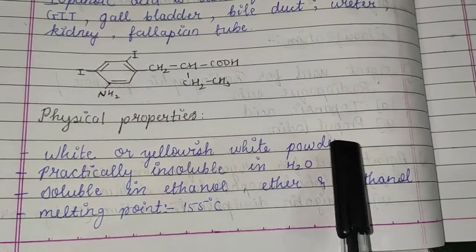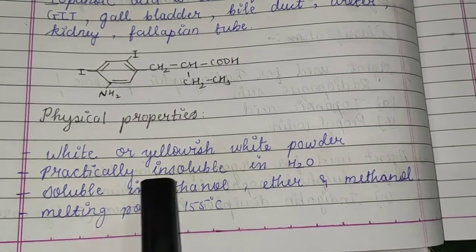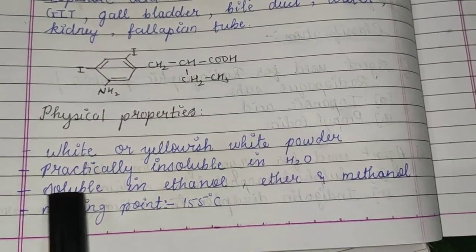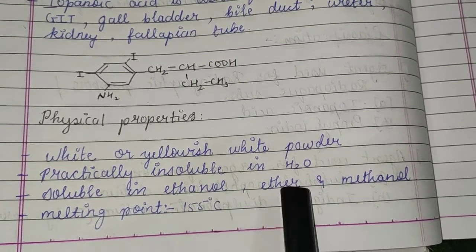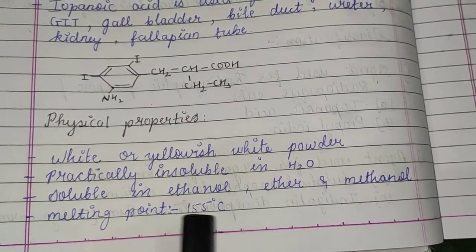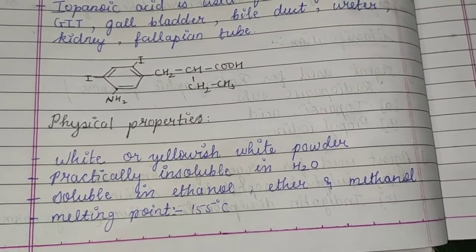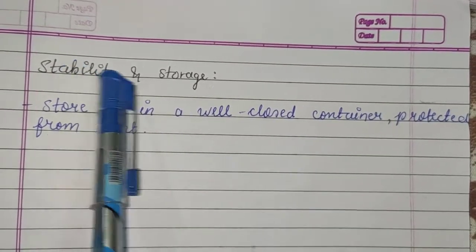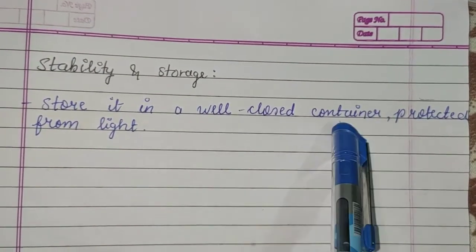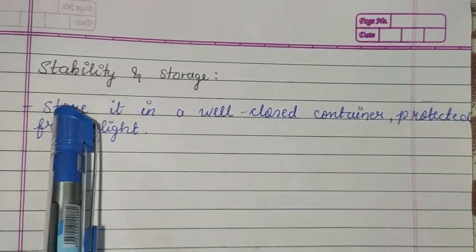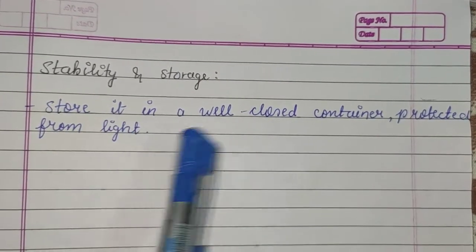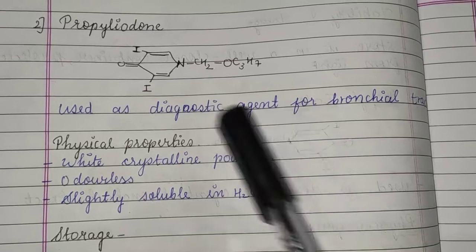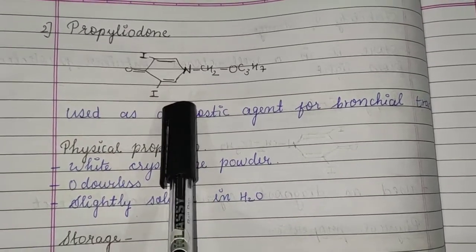Physical properties: it is a white to yellow-white powder, practically insoluble in water, soluble in ethanol, ether, and methanol. Melting point is 155°C. Stability and storage: it is stored in a well-closed, light-protected container.